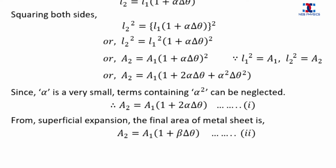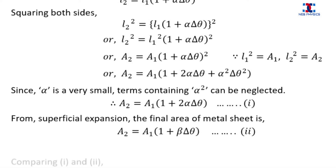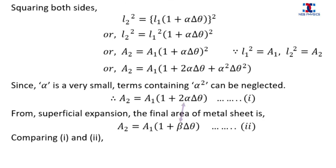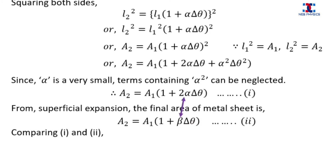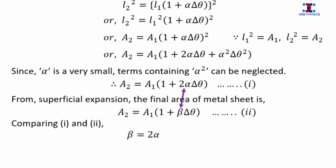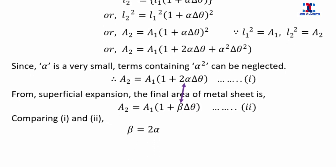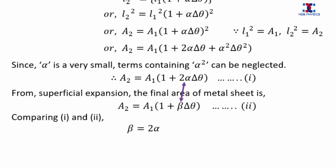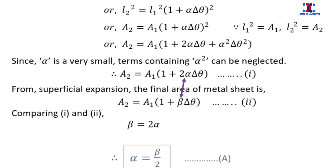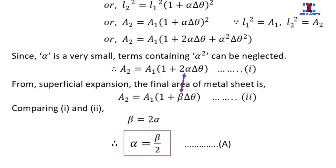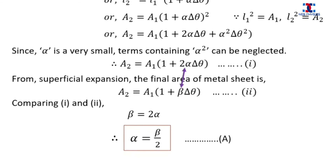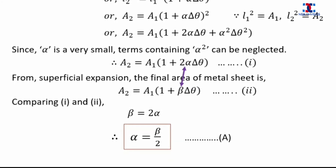We know that equation 1 and equation 2 are both true. When we compare them we get beta is equal to twice of alpha. This can finally be written as alpha is equal to half of beta, and this is the relation between alpha and beta.